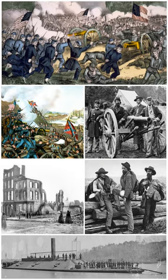The Confederacy collapsed, slavery was abolished, and four million black slaves were freed. The Reconstruction era overlapped and followed the war, with the process of restoring national unity, strengthening the national government, and granting civil rights to freed black slaves throughout the country.